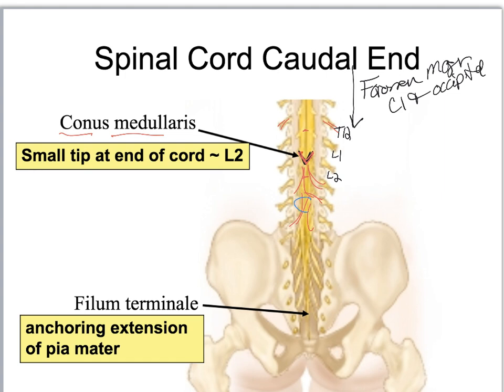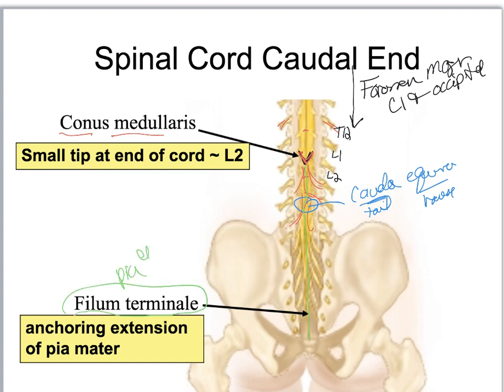This section is called the cauda equina — 'cauda' means tail and 'equina' means horse, so to some old anatomy anatomist it looked like a horse's tail. Then there's a thin strand, almost like a single thread of spider web — this is an extension of pia mater called the filum terminale, and it anchors the spinal cord so it doesn't bounce up and down and shear off your spinal nerves.